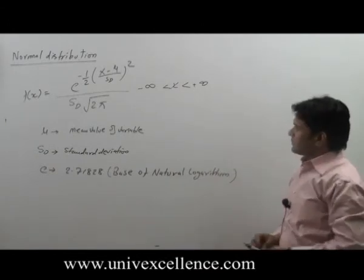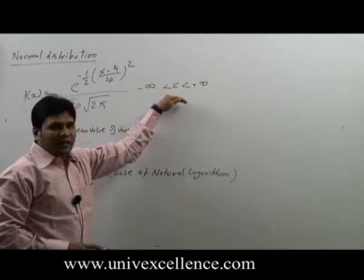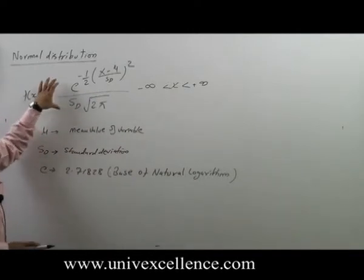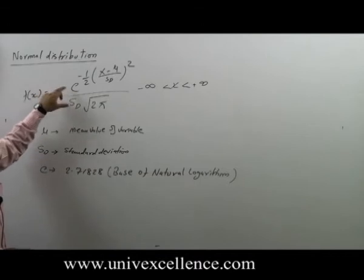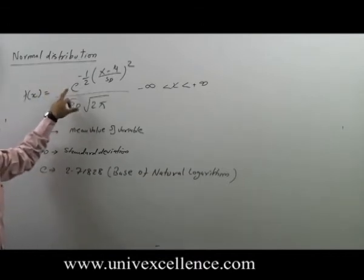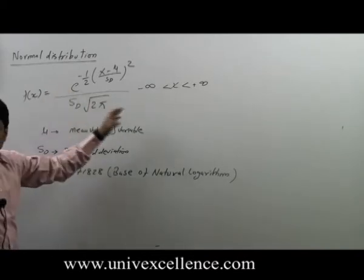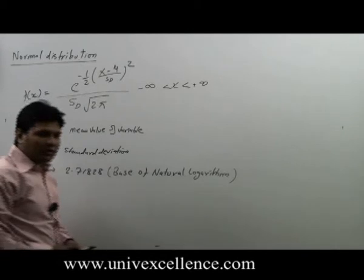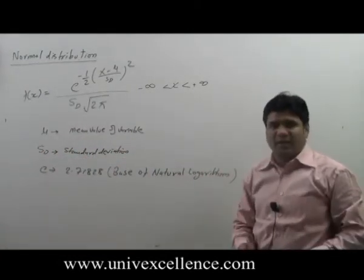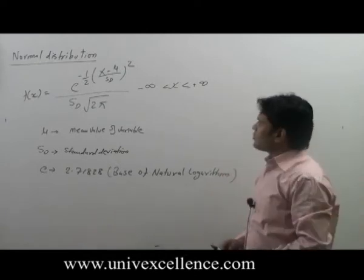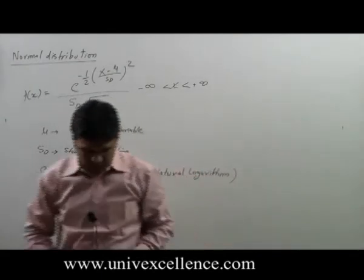Now this can be verified by looking at the formula. The formula is basically an exponential function, and we know that an exponential function is described for each value of x—it does not discontinue at any point. That's why this particular distribution is a continuous distribution.